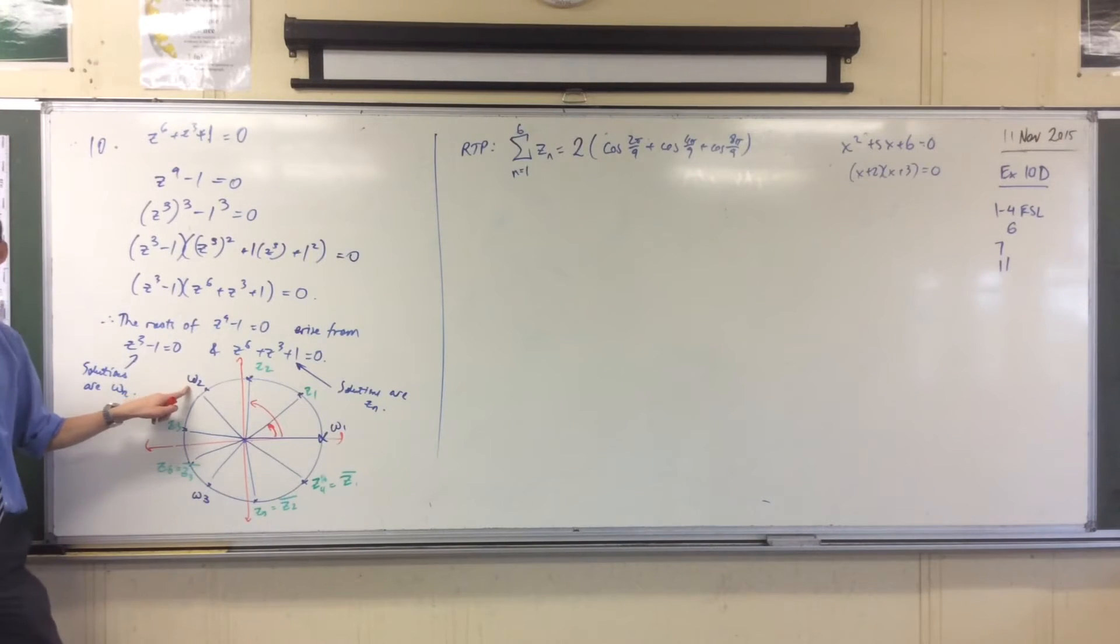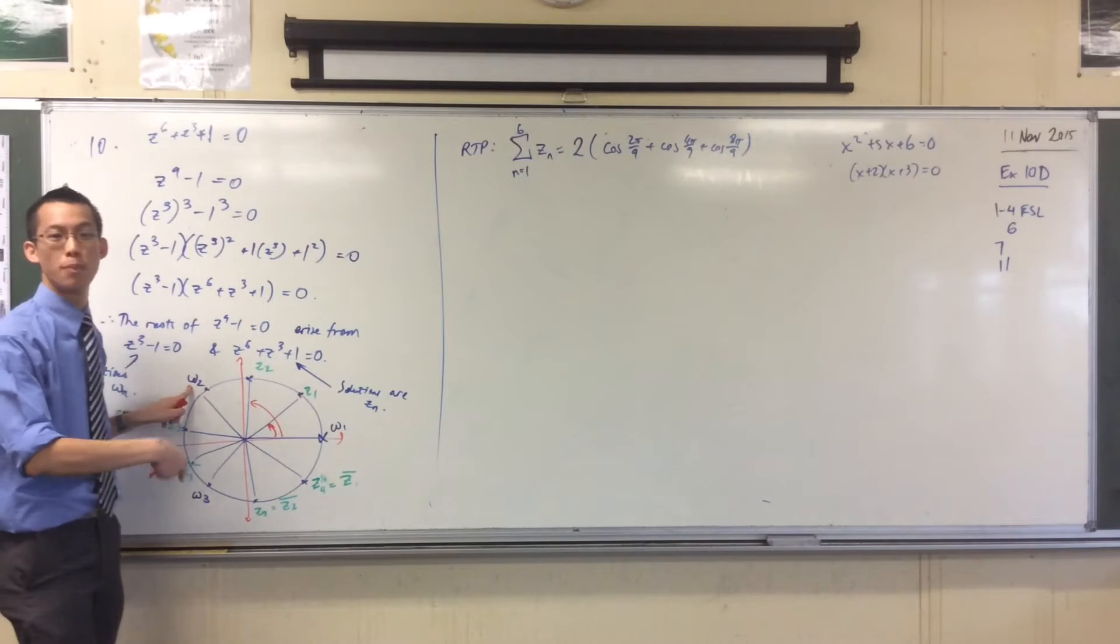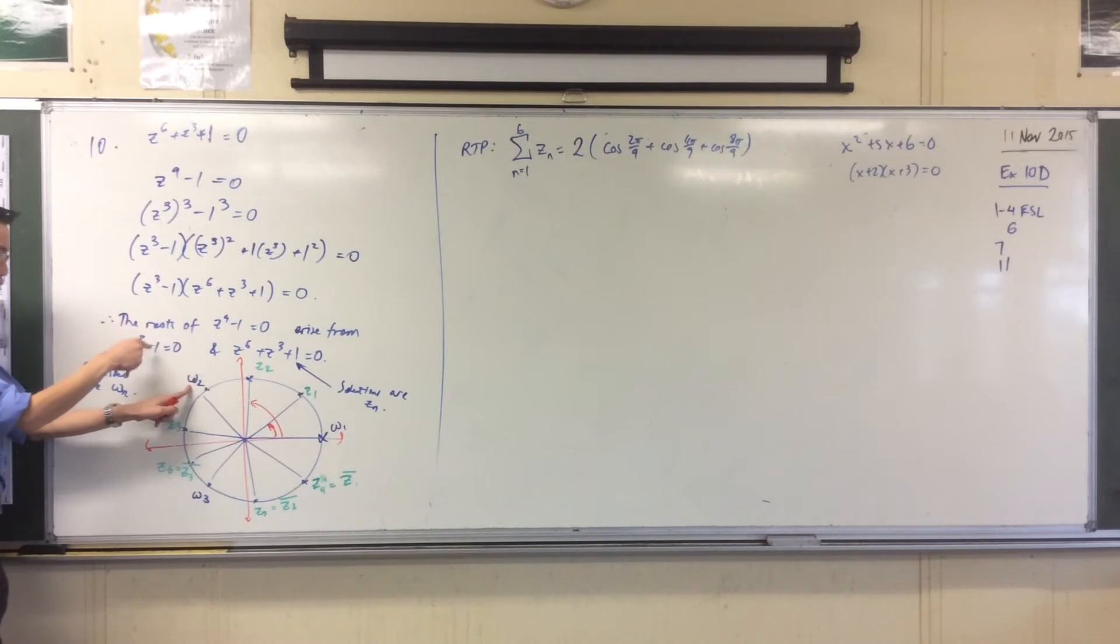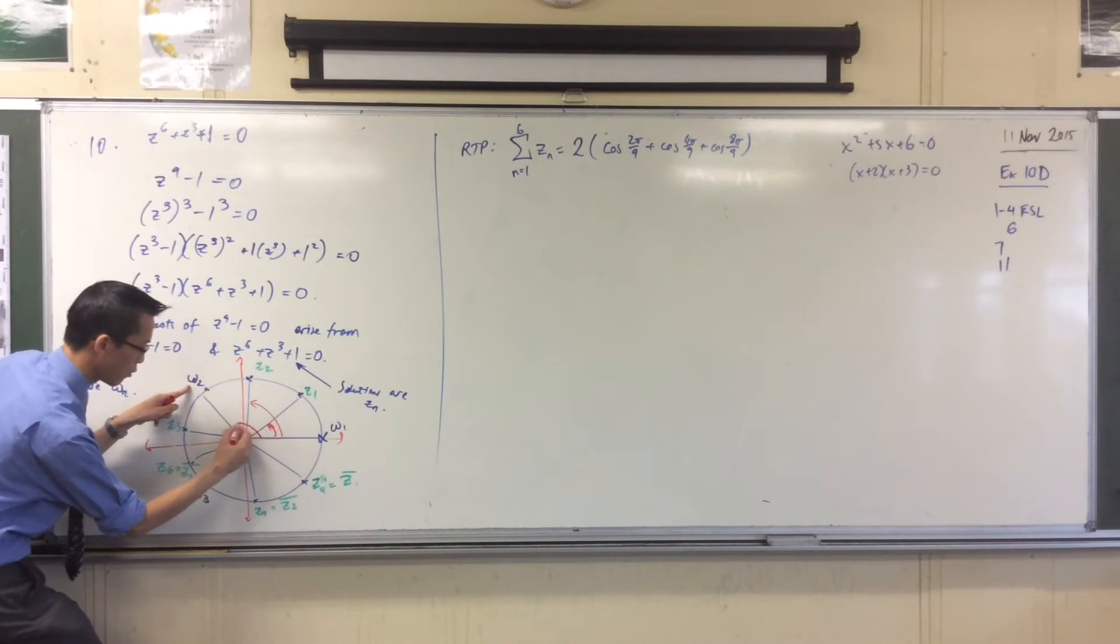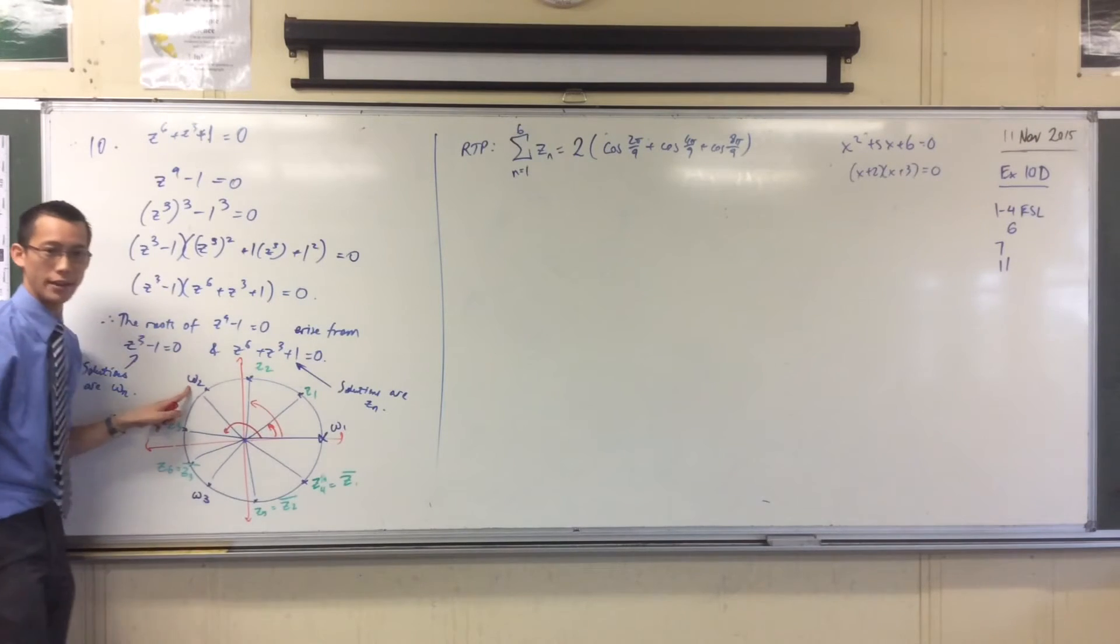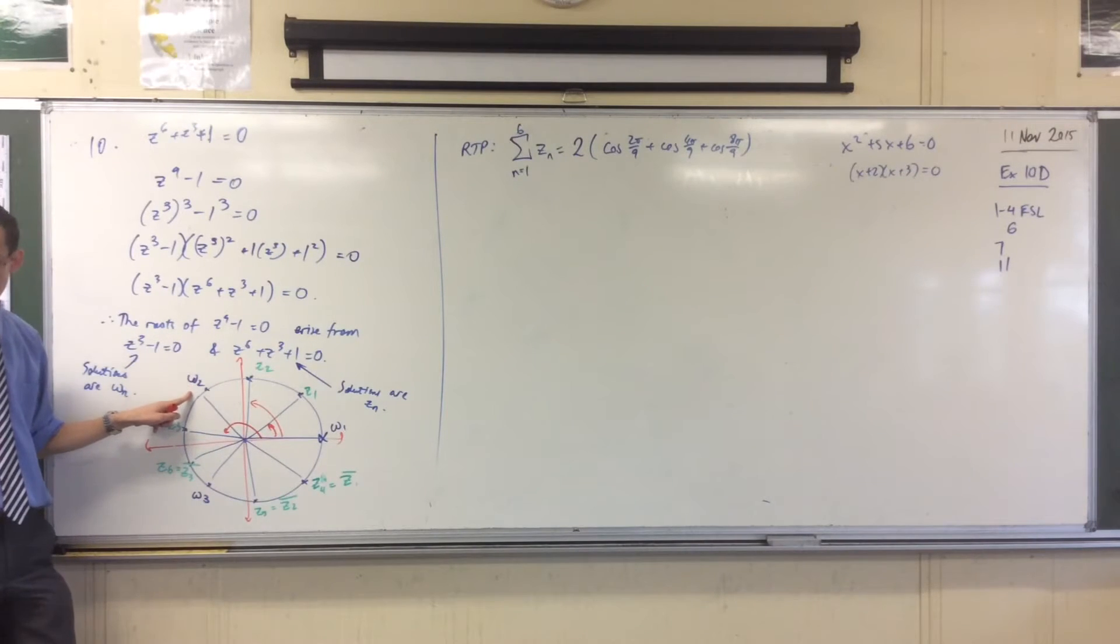It's a solution of the other guy. Because 6π on 9 is 2π on 3, which is one of the cube roots of unity. So I skip 6π on 9, and then I come all the way around to 8π on 9. So there are those results. That's the first thing I notice.